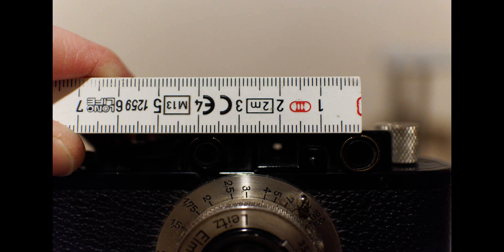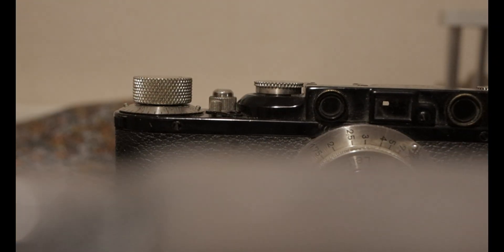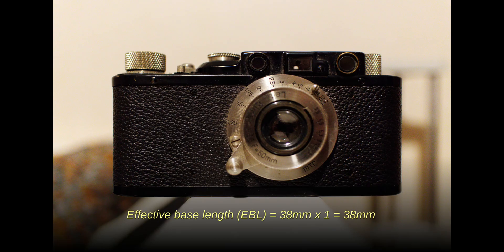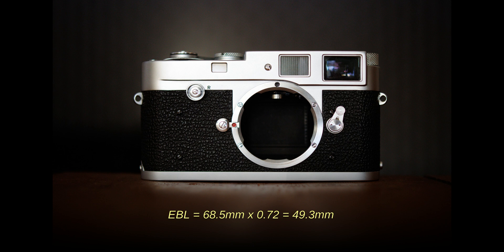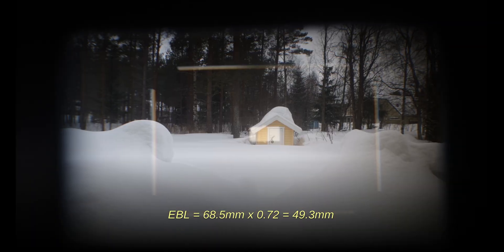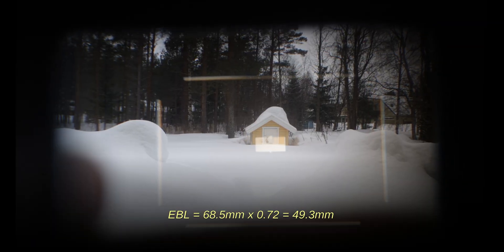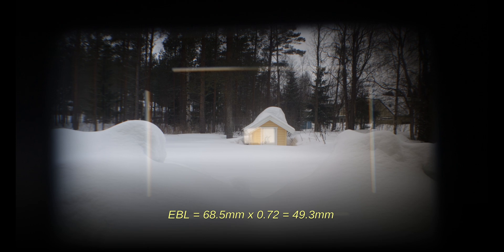The effective base length is the actual length times the magnification factor. As the Leica 2 model D has a magnification of 1 to 1 or life size, the effective base is 38 millimeters times 1. A Leica M has 68.5 millimeter base length times 0.72 magnification, which equals about 49 millimeters.